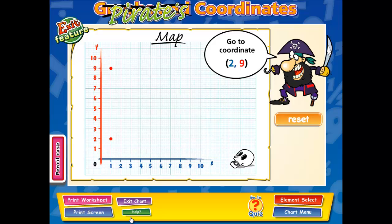If a student misses a coordinate, then the pirate will say try again and give them the coordinate so that they can try again. Once the student has completed all the coordinates that the pirate has given them, they will reveal and unlock the treasure chest.